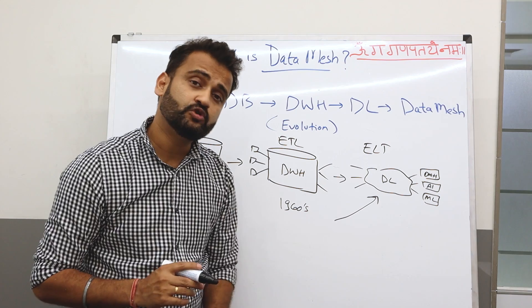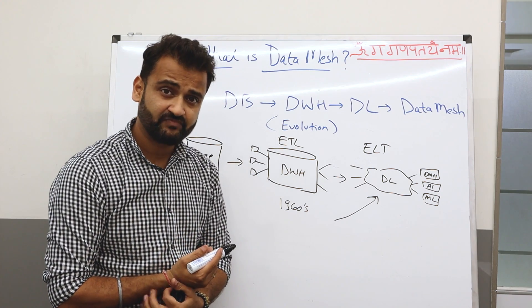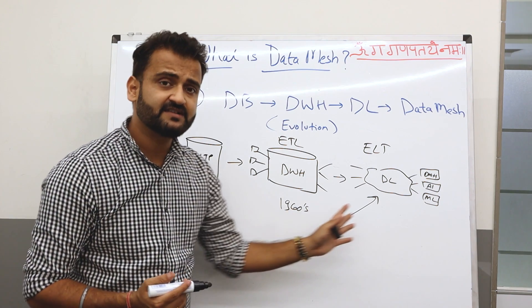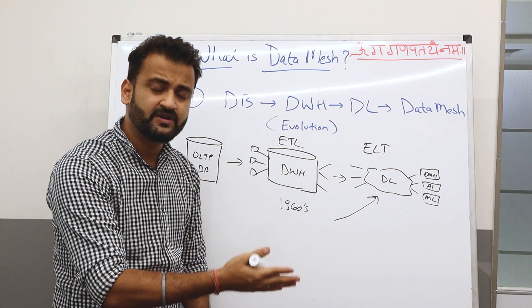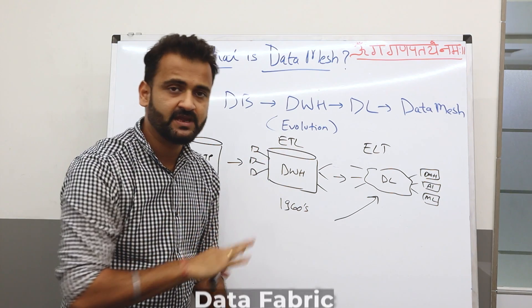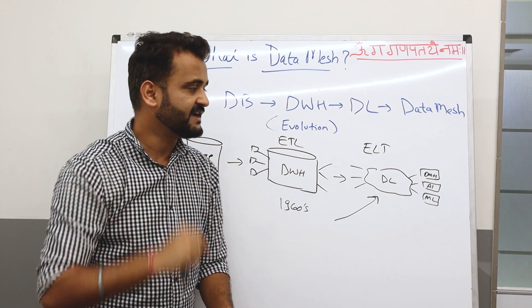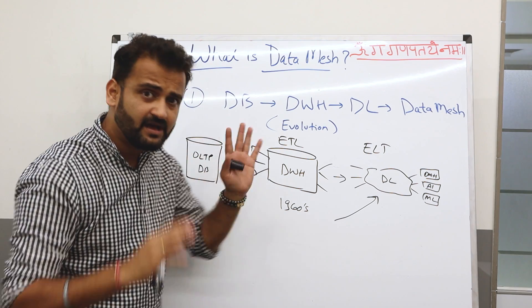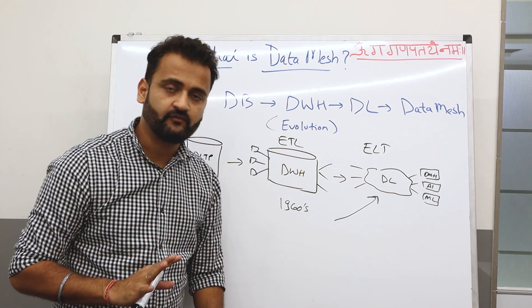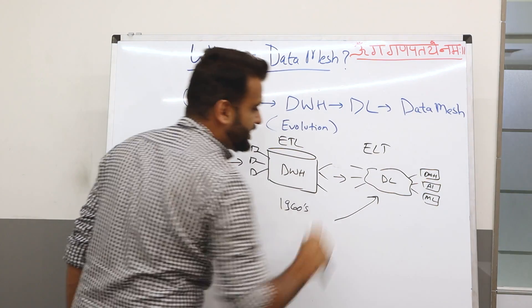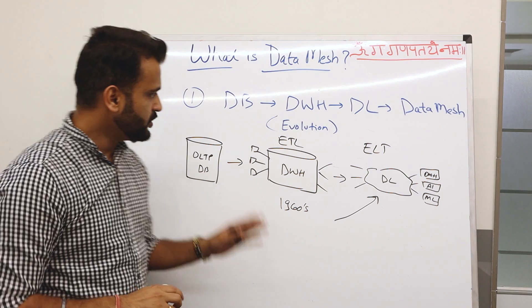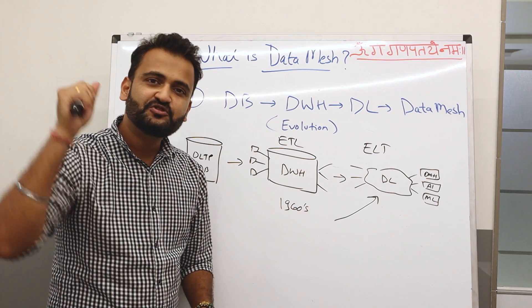And then based on my needs I will decide where I want to take this data next. So this has been our general evolution. And now I think we are also getting into data fabric. If you want to understand data fabric maybe in some other video we can cover. Let me know in the comment. But this is a generic evolution what we have seen. Now the question arises, what does Data Mesh bring new on this table?